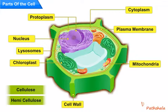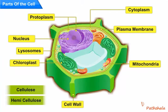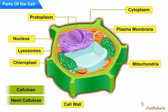Generally, cell wall is absent in animal cells. The jelly-like substance present between the nucleus and cell membrane is called cytoplasm.